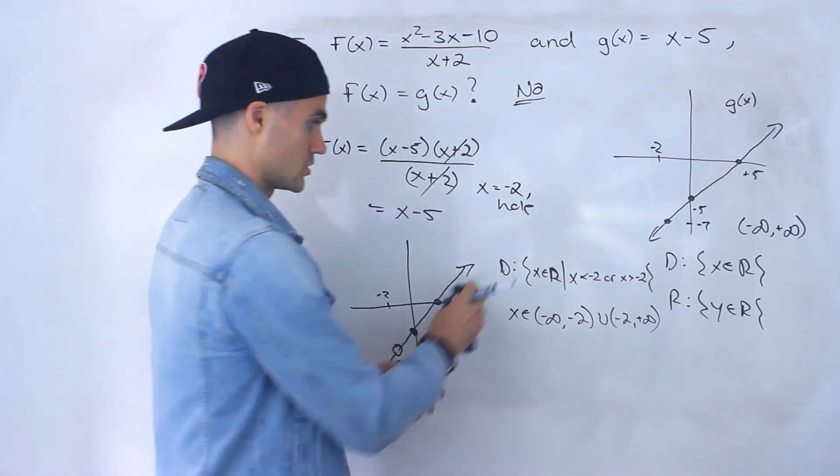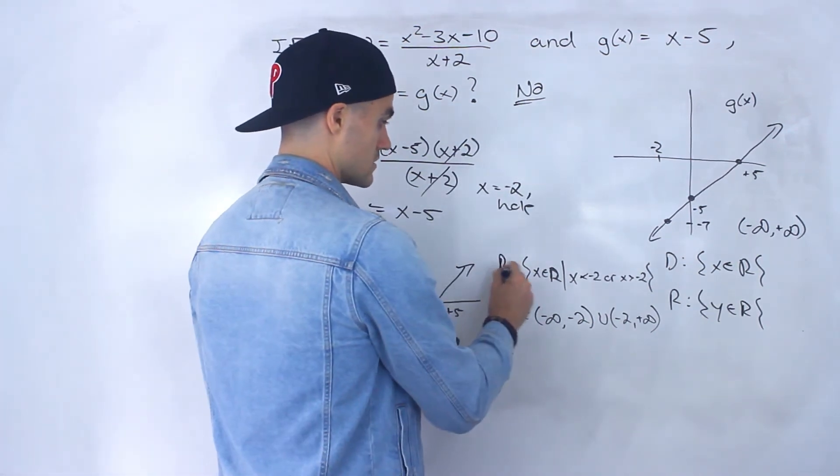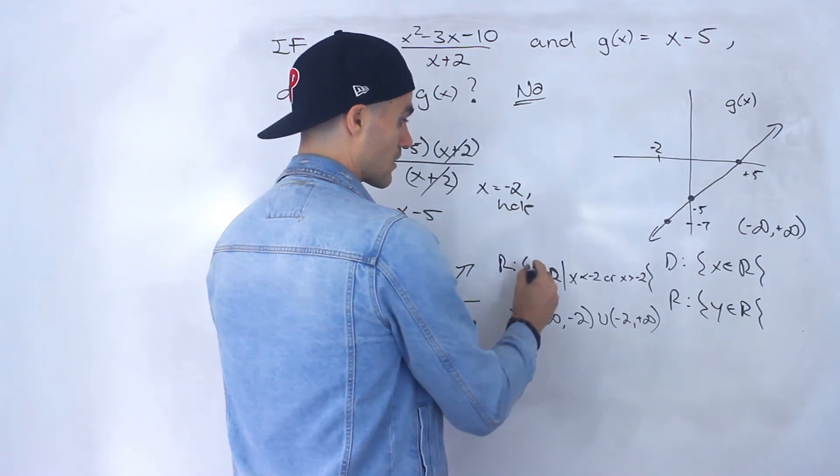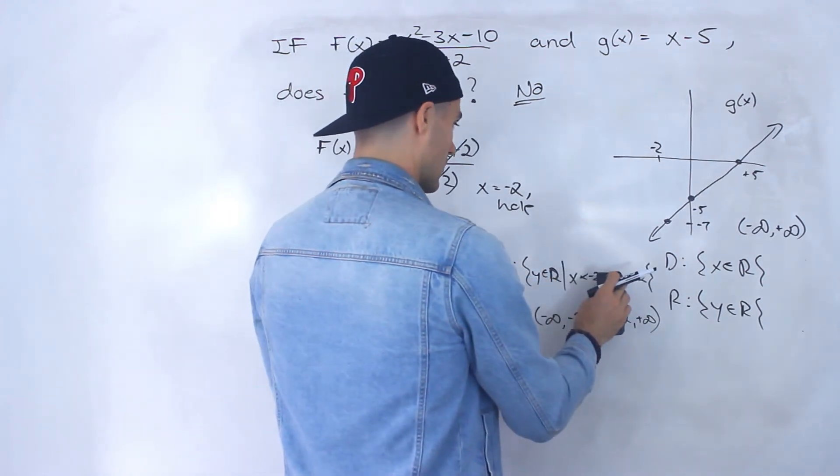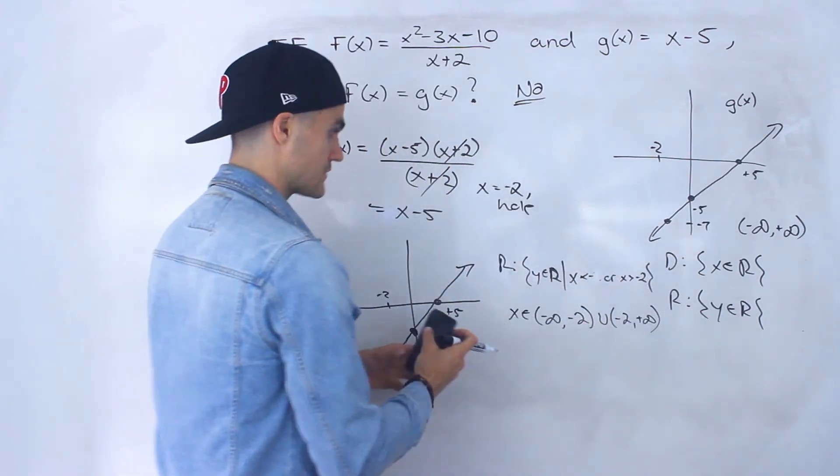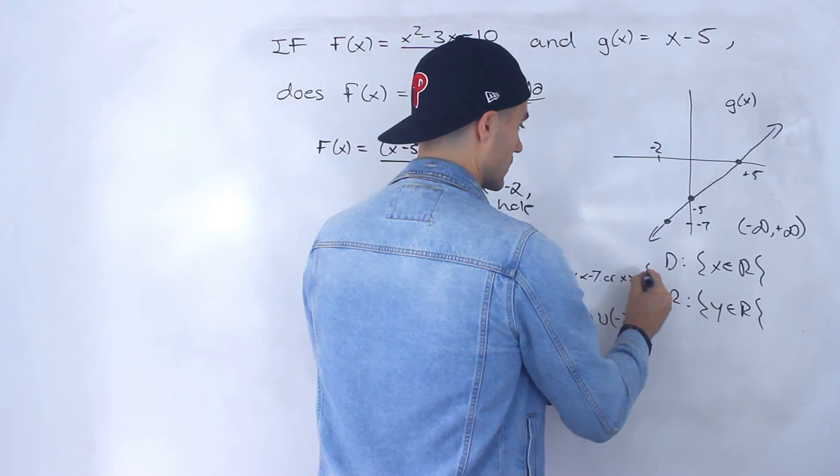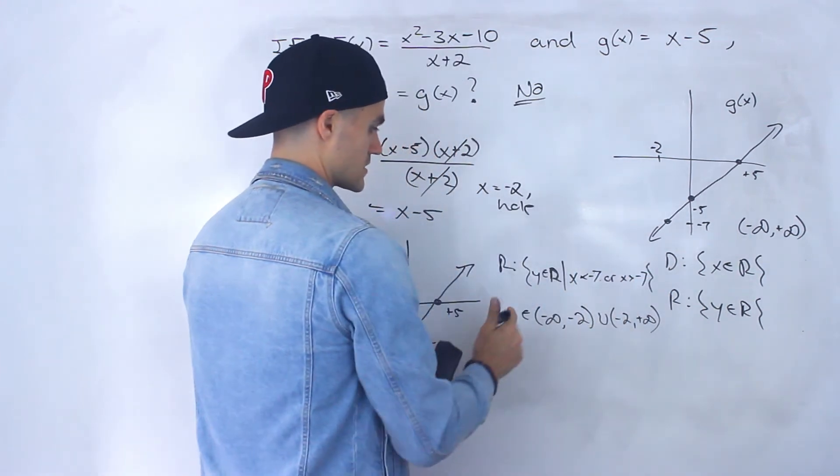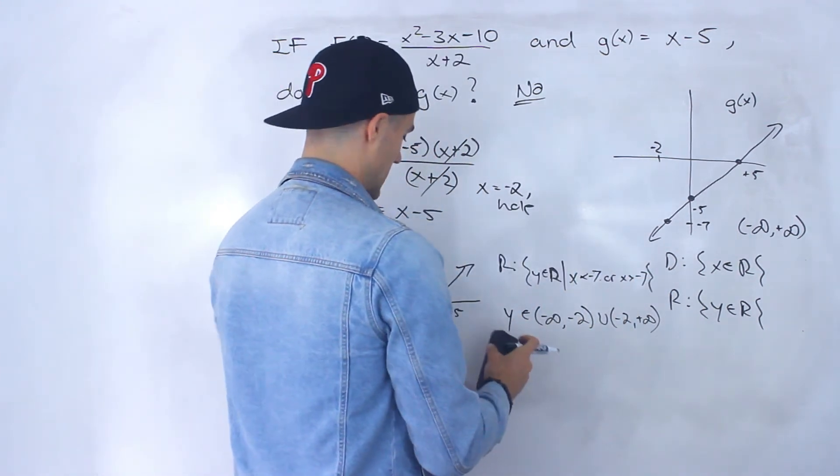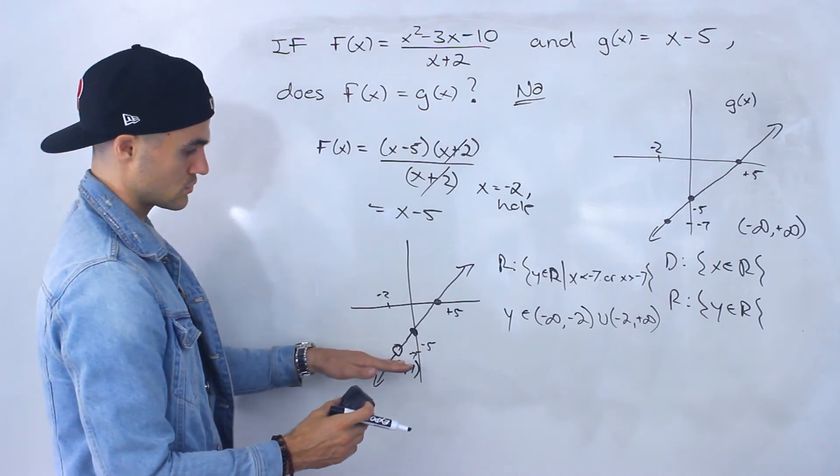And then the range for f(x) would be y < -7 or y > -7. In interval notation, it would be from -∞ to -7, and then from -7 to +∞.